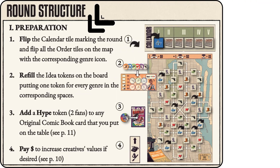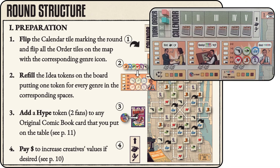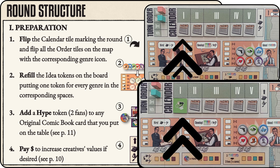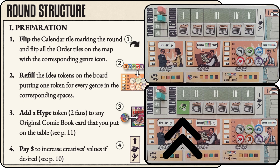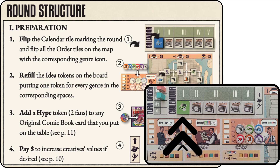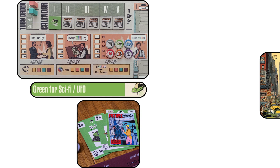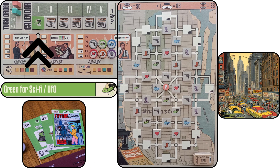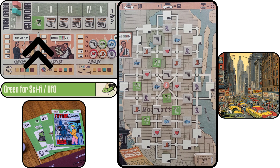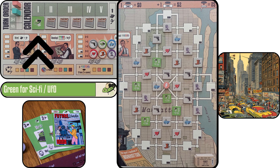Round one structure. Phase one — preparation: step one, flip the calendar tile marking the round and flip all the sales order tiles on the map with the corresponding genre icon. Steps two, three, and four are not relevant to round one. Here we can see that we flip the sci-fi tile on the map, which shows areas in Manhattan where this genre is particularly popular.